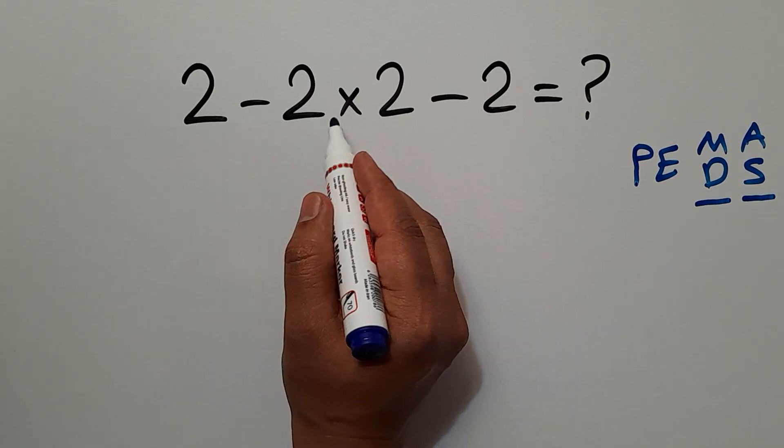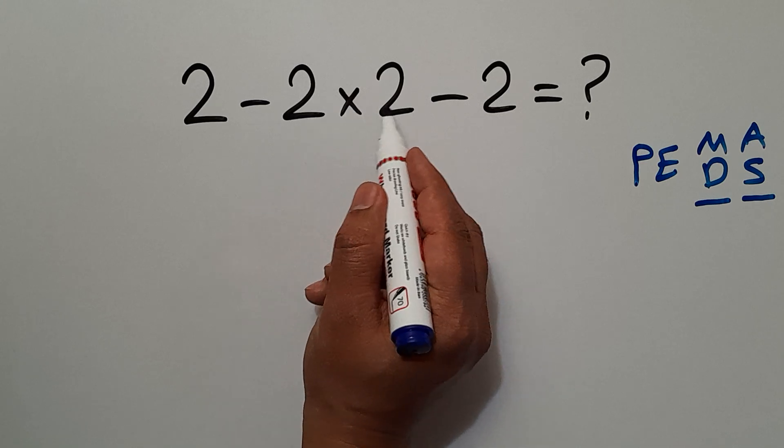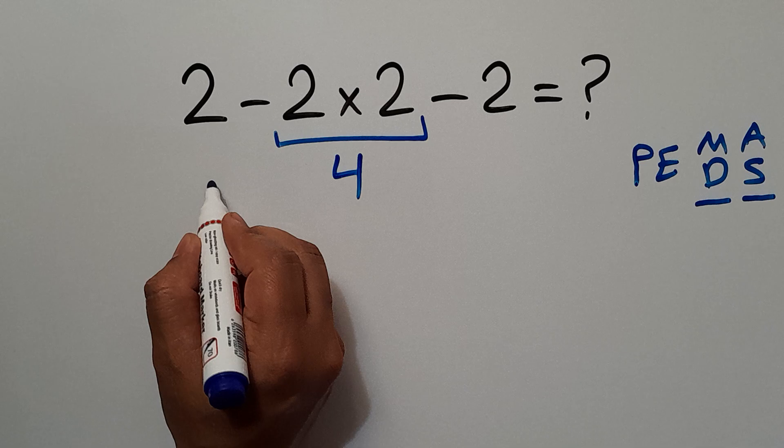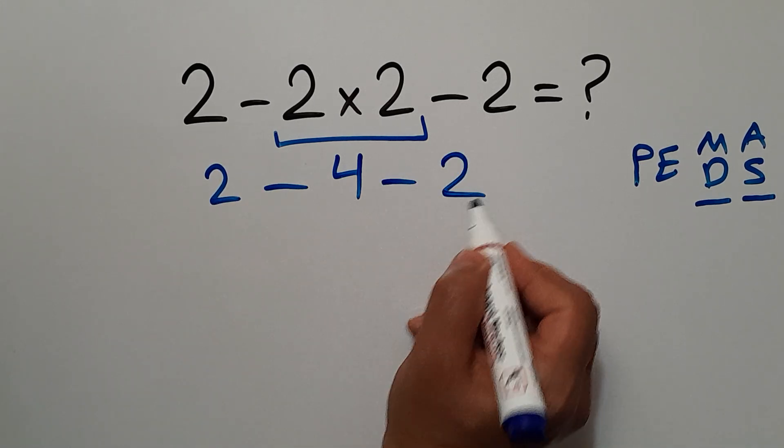So here, first we have to do this multiplication. 2 times 2 gives us 4. So we have 2 minus 4 and minus 2.